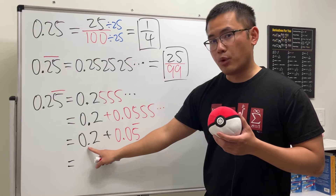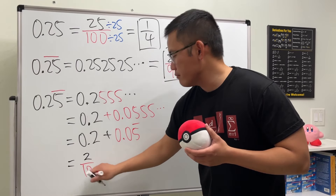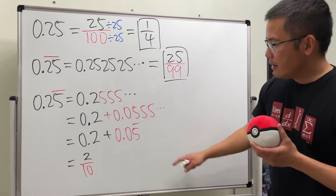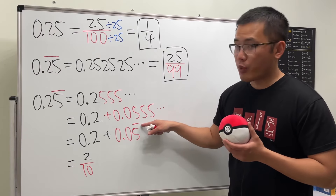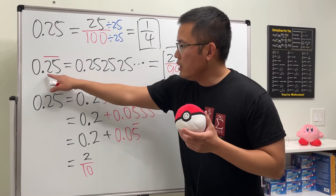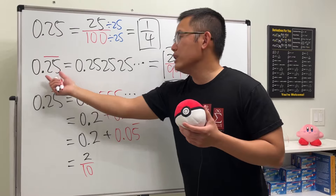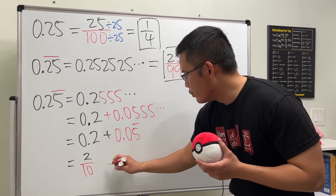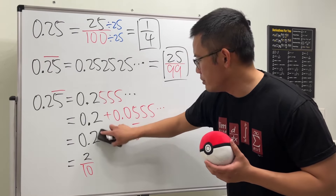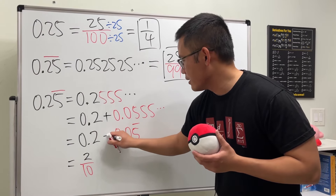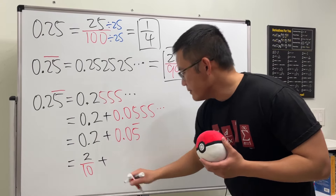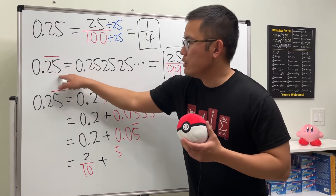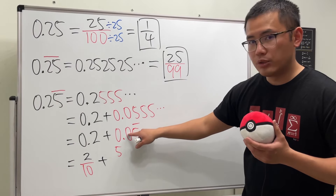For the non-repeating part, 0.2 — we only have one number after the decimal point, so this is 2 over 10, since it's in the tenths place. For the repeating part, 0.05 with a bar — when we have one repeating digit, we divide by 9, but here we also have a non-repeating digit before it, so we divide by 90.